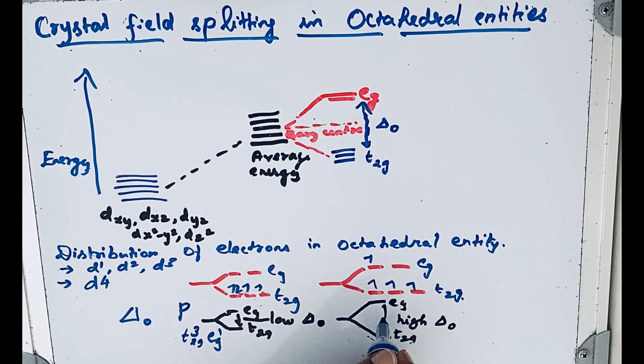So in that case, it will follow t2g⁴ configuration, meaning pairing can be possible. This is possible with strong field ligands. It is called low-spin complexes.